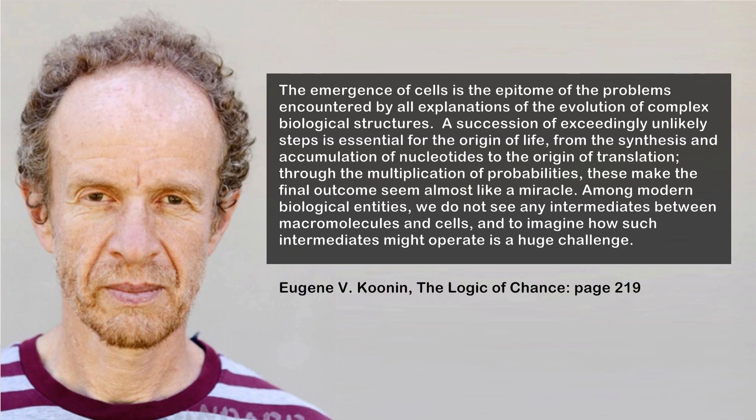As Eugene Koonin stated, the emergence of cells is the epitome of the problems encountered by all explanations of the evolution of complex biological structures. A succession of exceedingly unlikely steps is essential for the origin of life — from the synthesis and accumulation of nucleotides to the origin of translation. Through the multiplication of probabilities, these make the final outcome seem almost like a miracle.